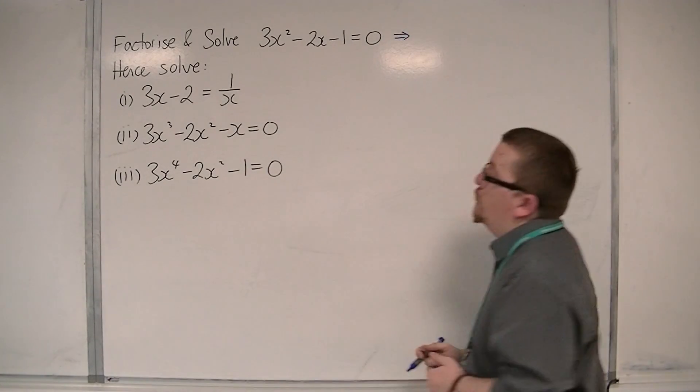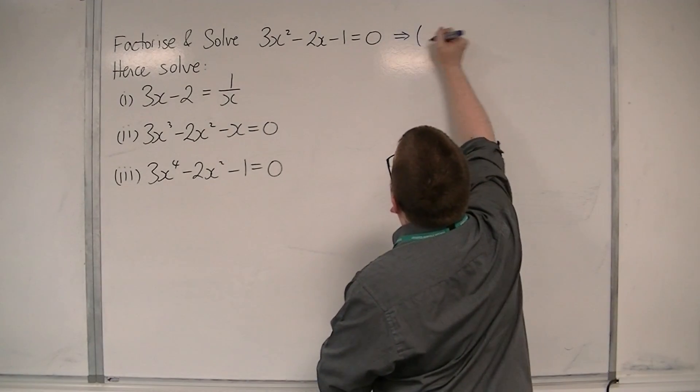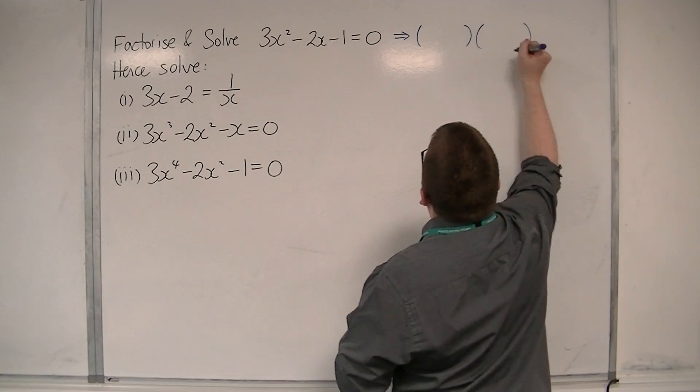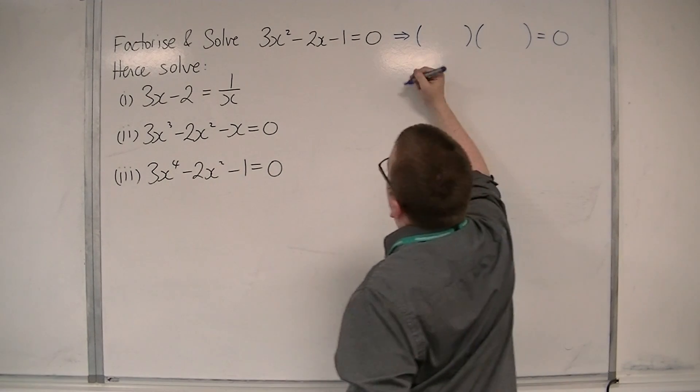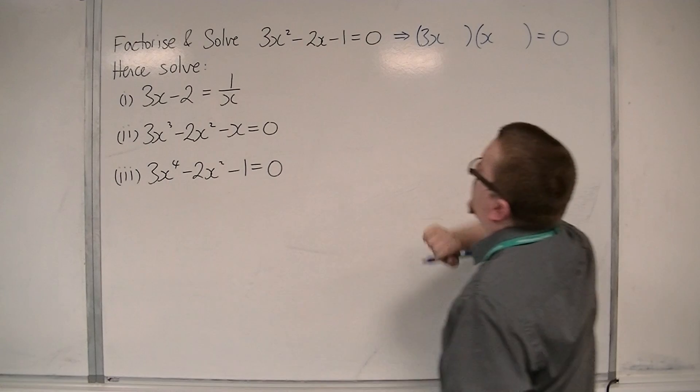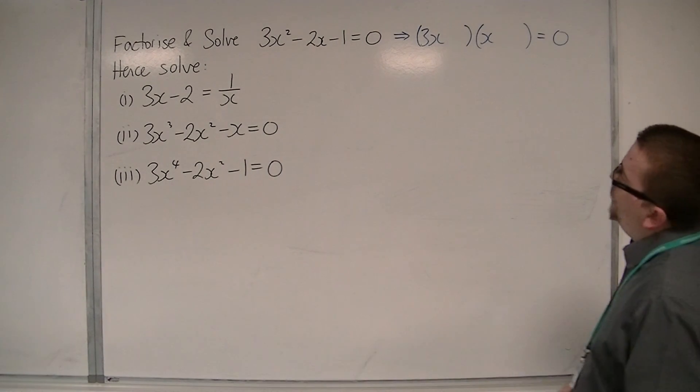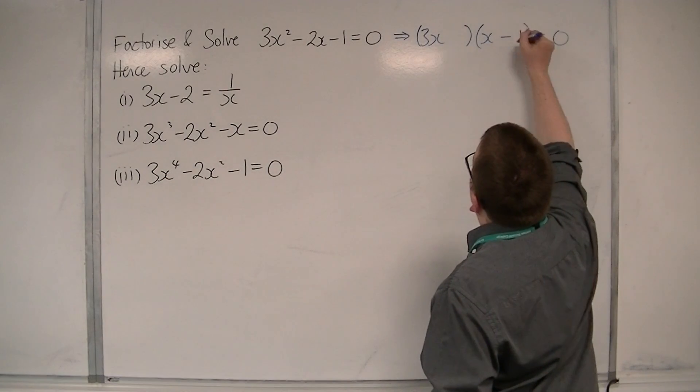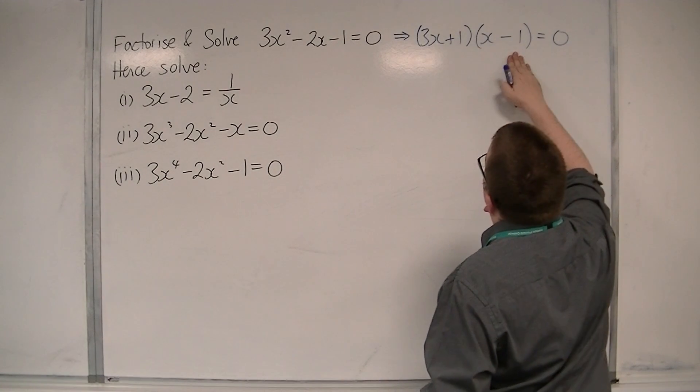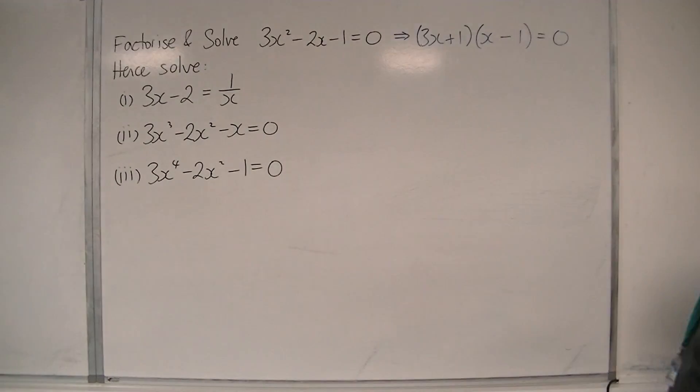You can use the factorising method for this. I'm going to go straight in and factorise it with brackets, rather. So, we're going to have a 3x and an x. The only way to get that minus 1 is through a minus 1 and a plus 1. If I have the minus 1 there and a plus 1 there, then I'm going to get minus 3x plus x makes that minus 2x. And so it's factorised.